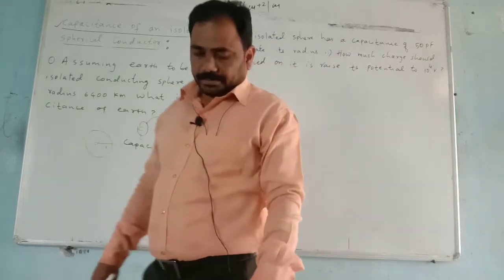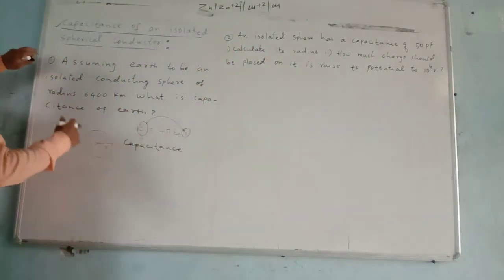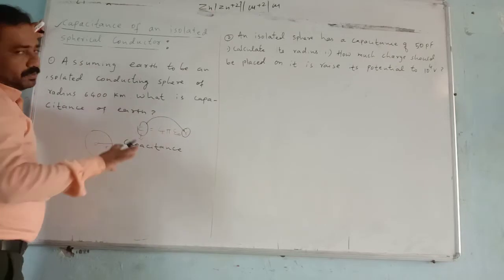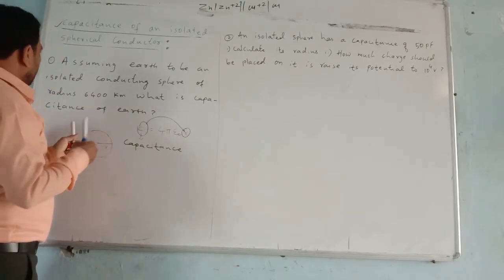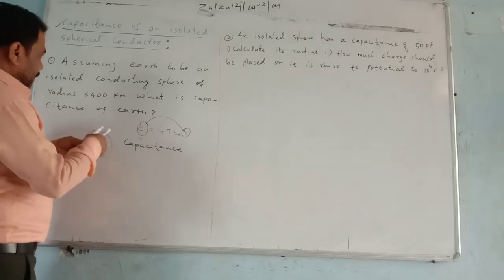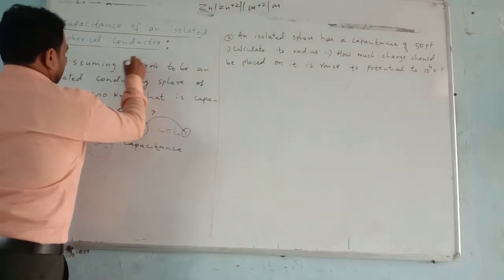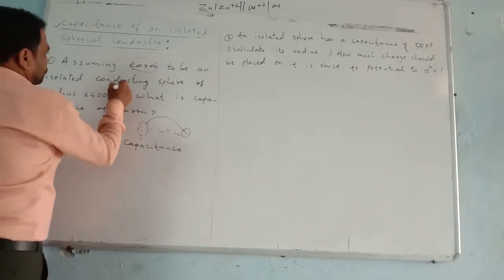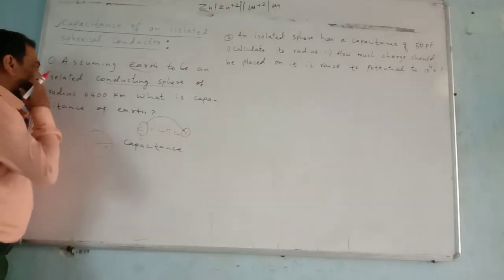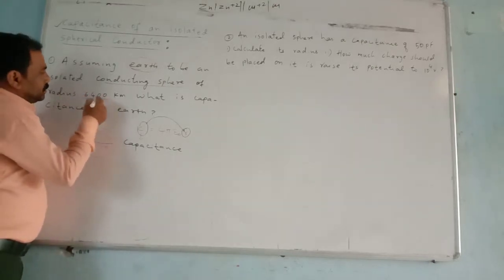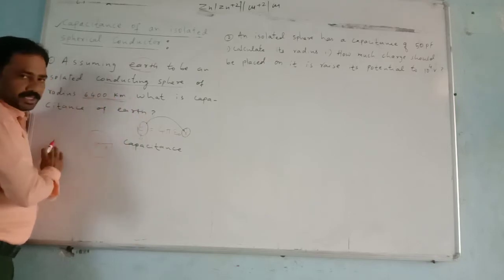Let us solve the first application. In the first application, the given information is: assuming Earth to be an isolated conducting sphere of radius 6400 kilometers.